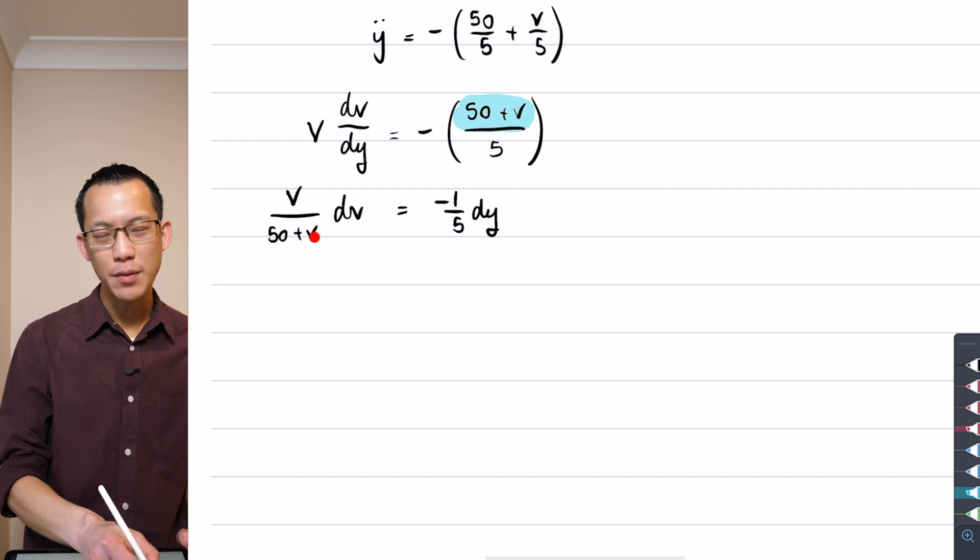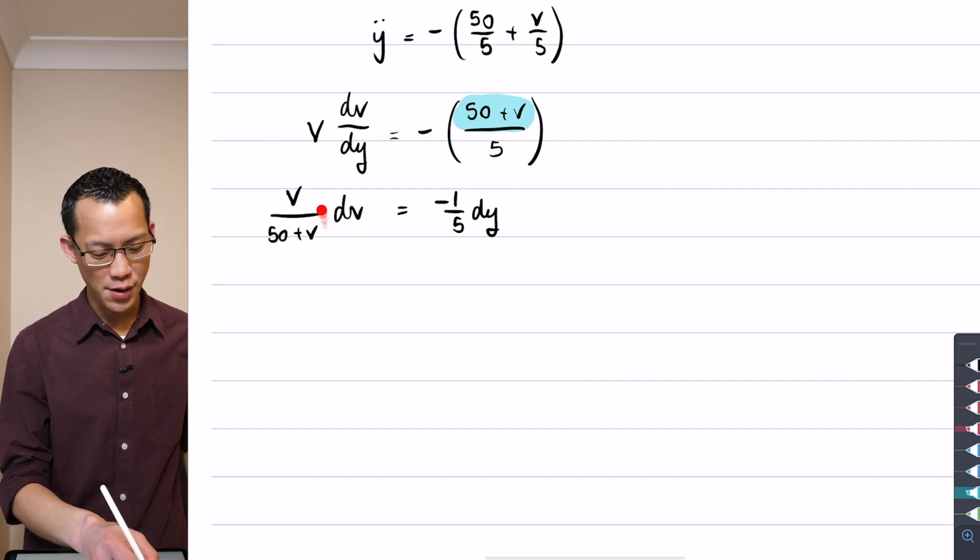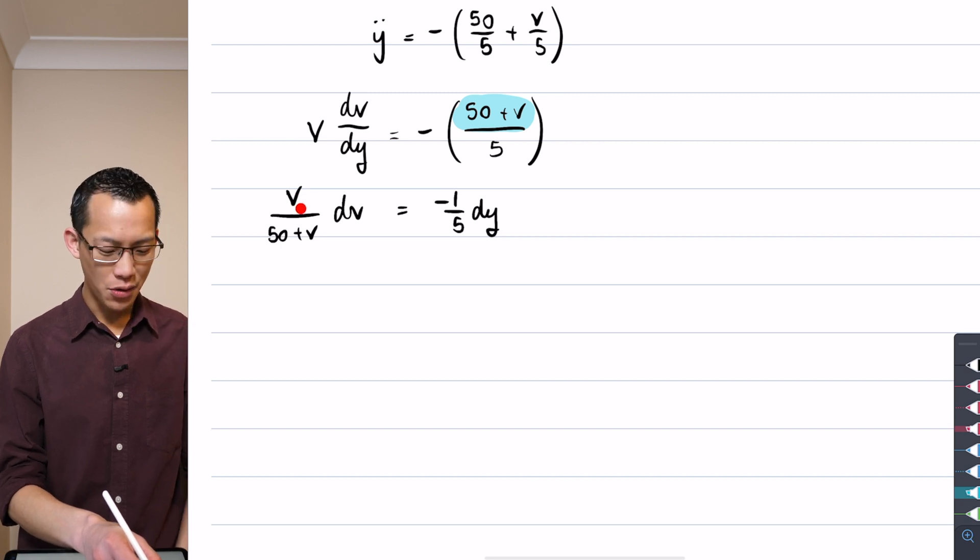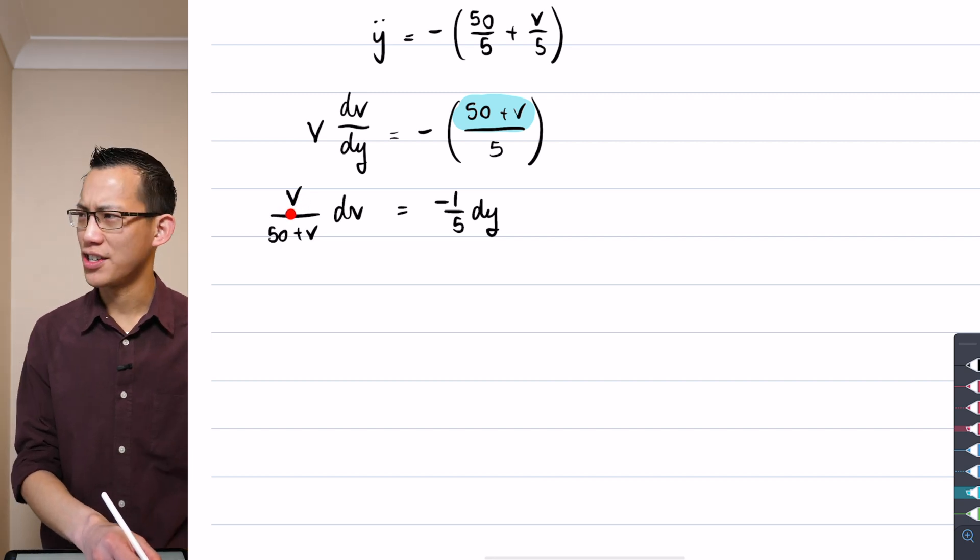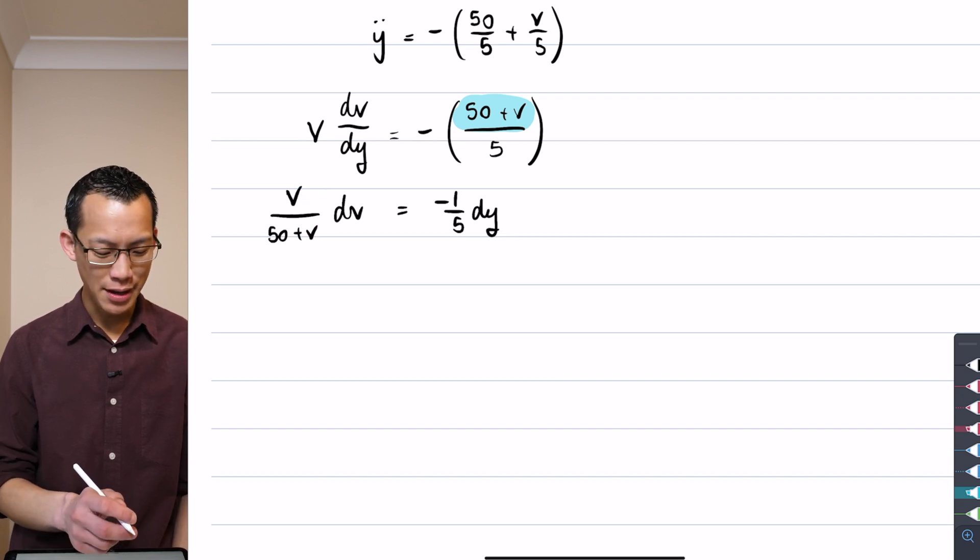I'm going to say if I wanted to have an f dash on f situation, right? The f in this case is 50 plus v. So, the f dash would be 1 in this case. So, if I had 1 on the top or any constant multiple of 1, a constant coefficient in front of the 1, then I'd be good, right? It'd be an f dash on f situation.